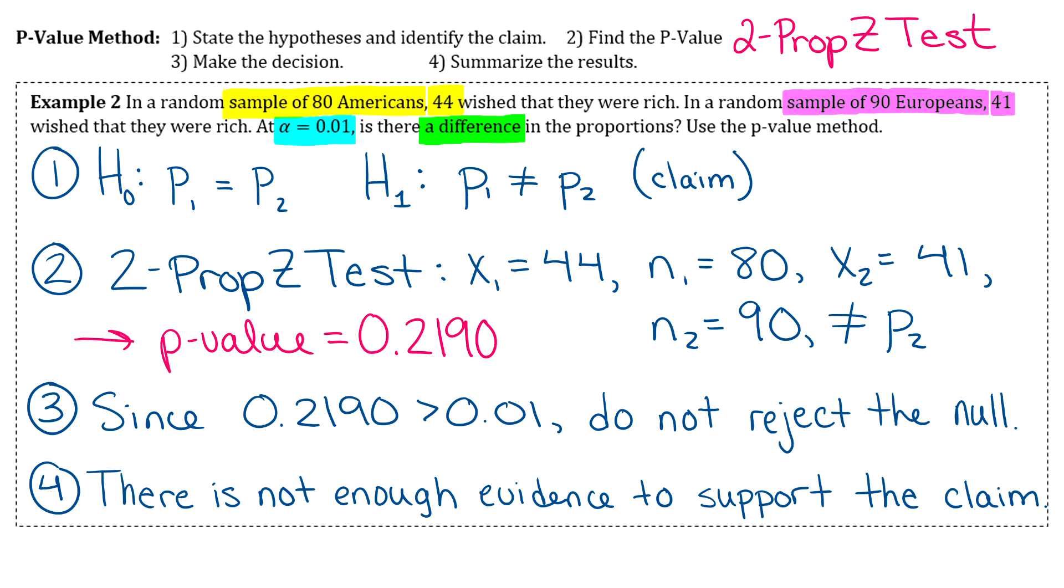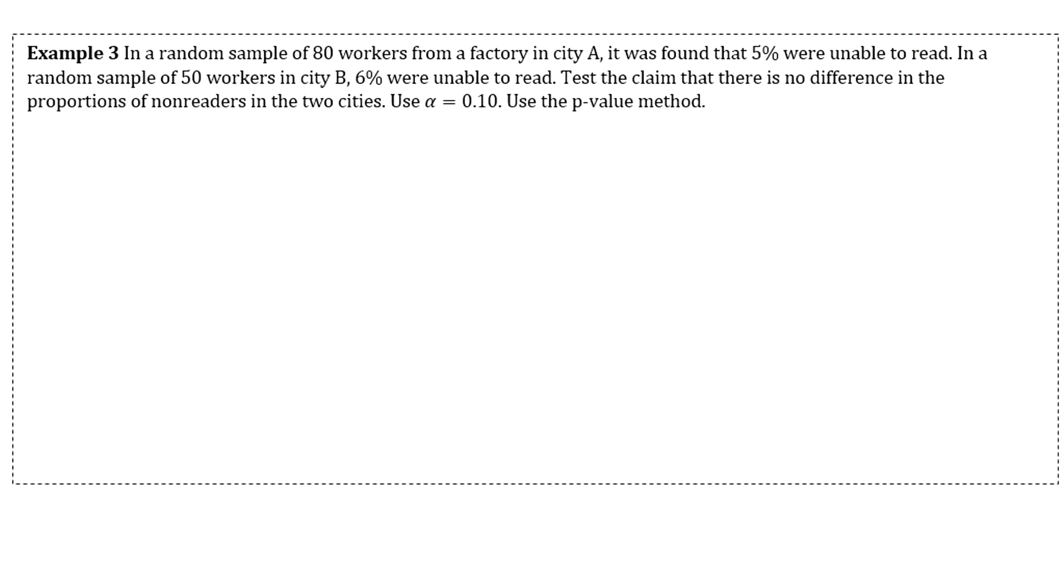Example 3 says in a random sample of 80 workers from a factory in city A, it was found that 5% were unable to read. In a random sample of 50 workers from city B, 6% were unable to read. Test the claim that there is no difference in the proportion of non-readers in the two cities. Use a level of confidence of 0.1.